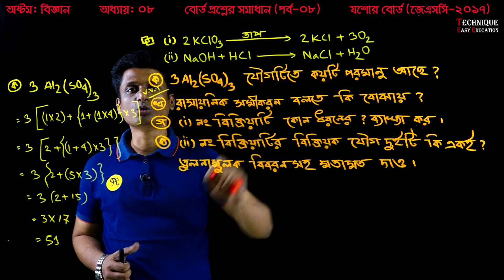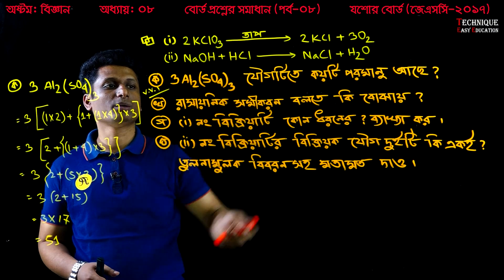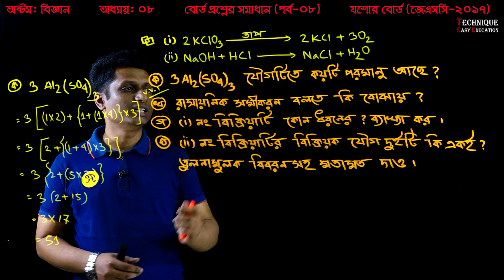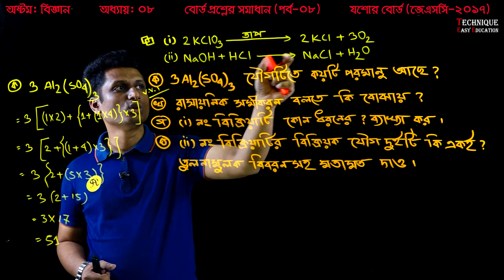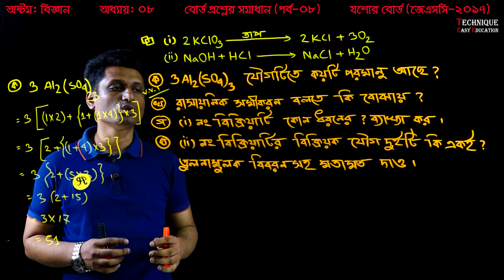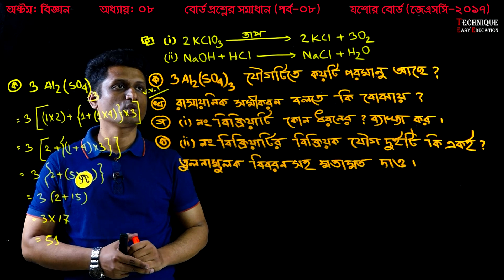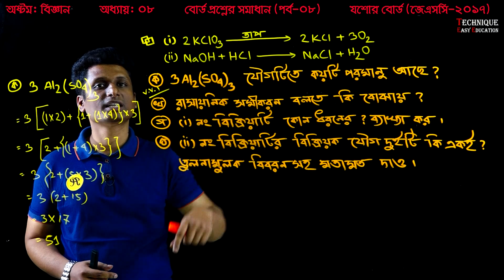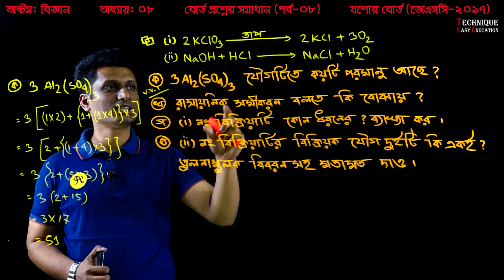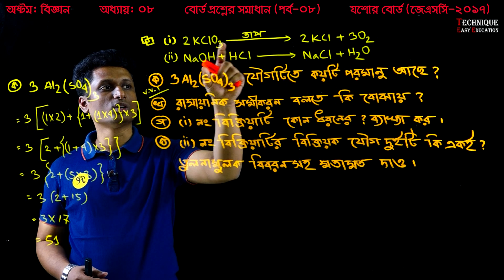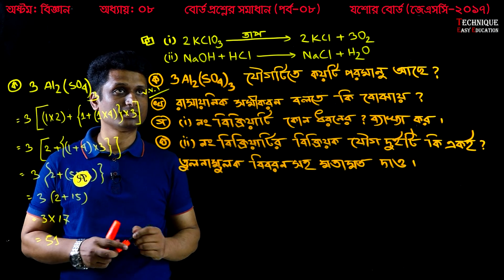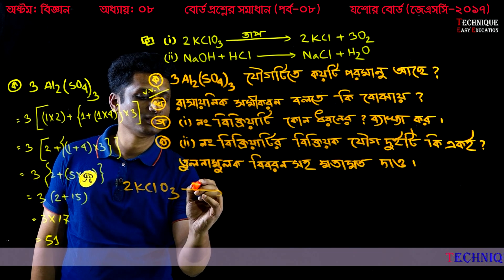What is the question? What is the question about? So we have two questions. We have given the questions and we need to select and update them. Let's see what type of question this is. What type of question is 2KClO3? What is that?